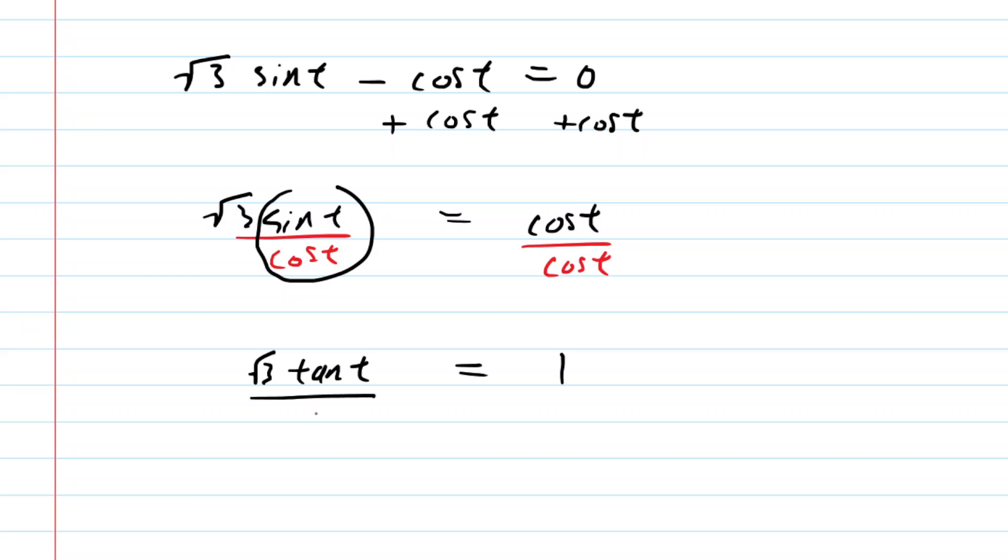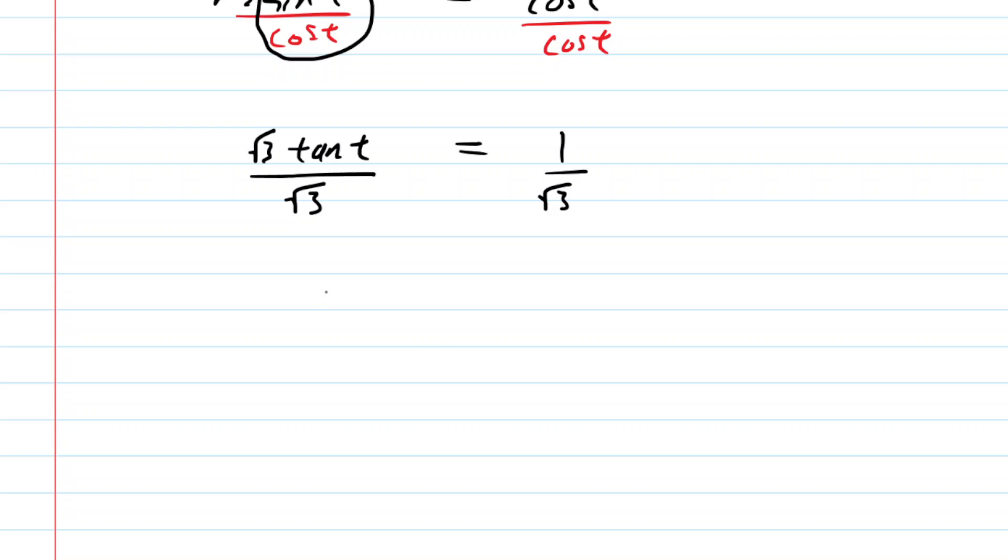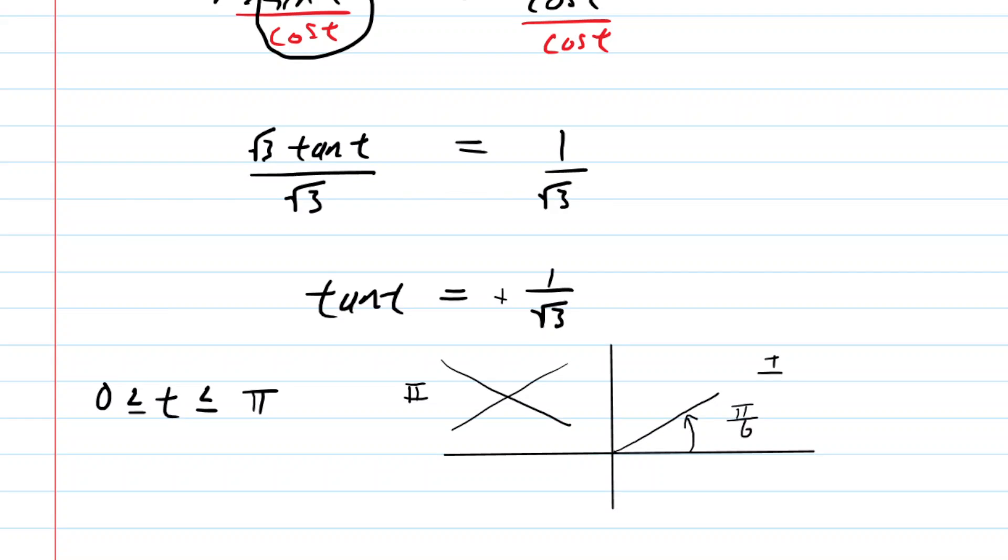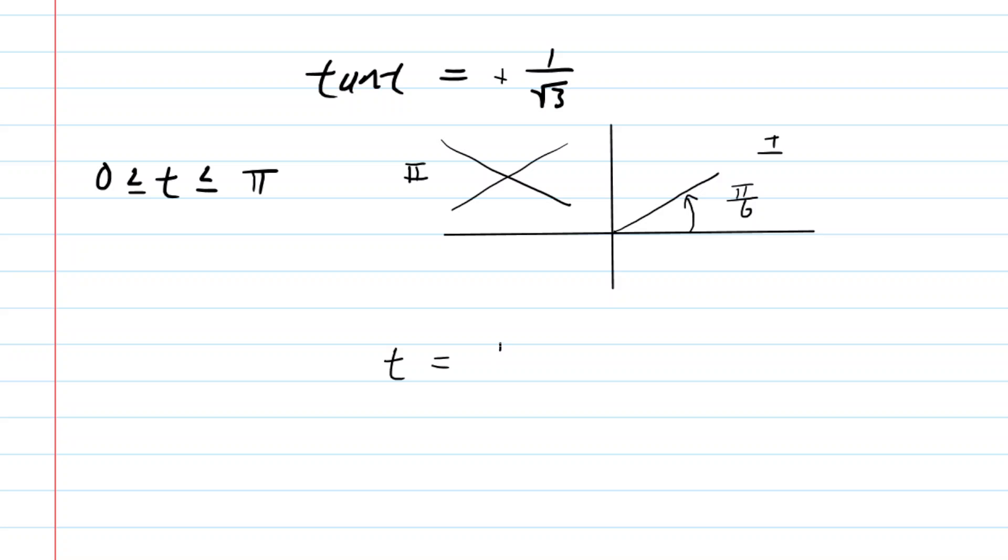So we have tan(t) = 1/√3. Recall the restrictions on t: it can only take values between 0 and π inclusively, which is quadrants 1 and 2. Since tangent equals a positive 1/√3, this rules out quadrant 2 where tangent is negative. From reference angle studies, the correct angle in quadrant 1 for tan = 1/√3 is π/6, or 30 degrees. So t = π/6.